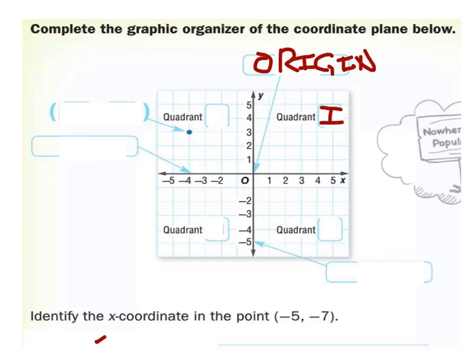What quadrant is here at the top right? One. Which one is in the top left? Two. Bottom left? Three. And so four.